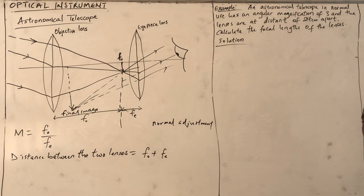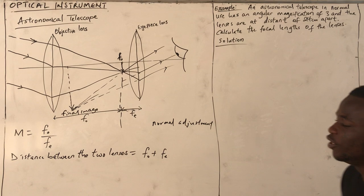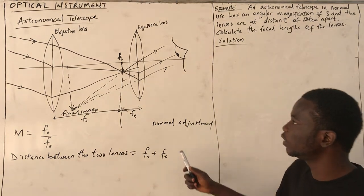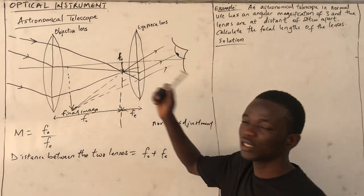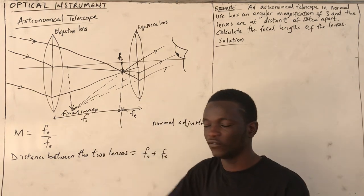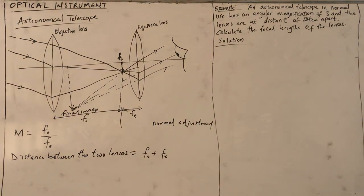When it is not in normal adjustment, the image, instead of forming at the focal length, will be formed at infinity. Now, this example.